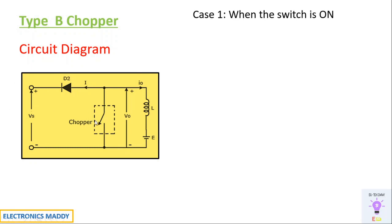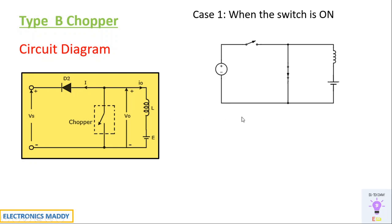First, let us assume when the switch is on — we are triggering this switch by providing a gate pulse. Consequently, when the switch is on it acts as a short circuit. The battery E starts giving energy to the inductor; the inductor starts charging with polarity plus and minus in this fashion, so the voltage across the inductor is assumed to be equal to VL.